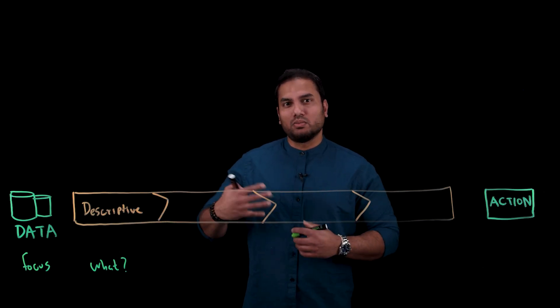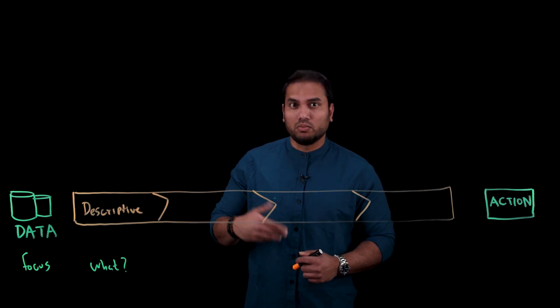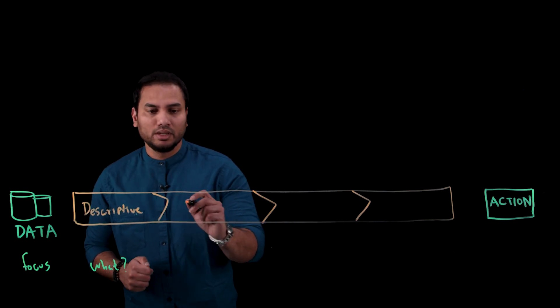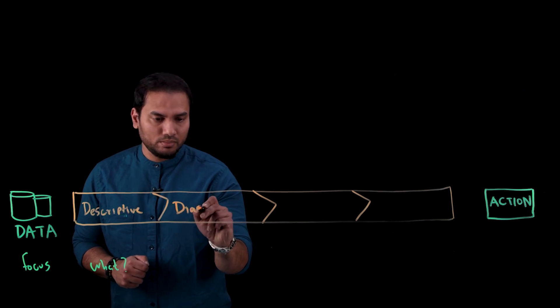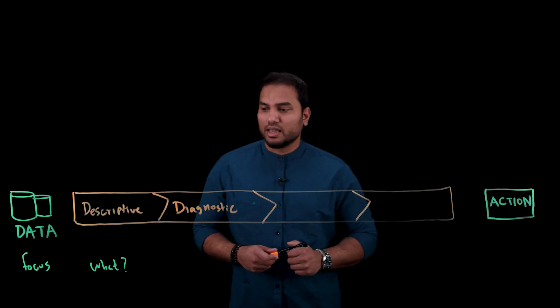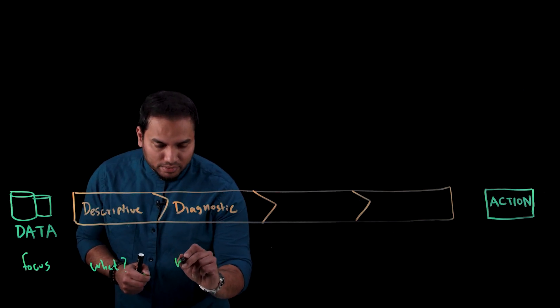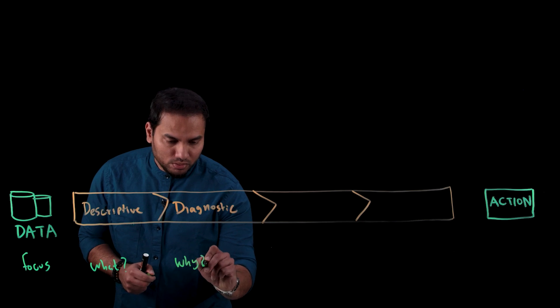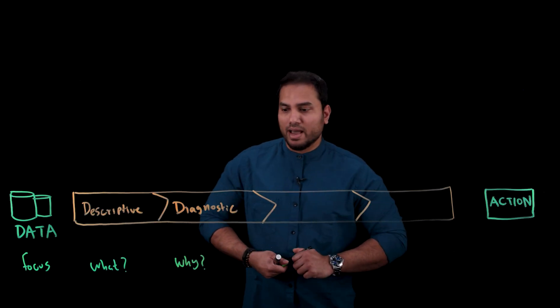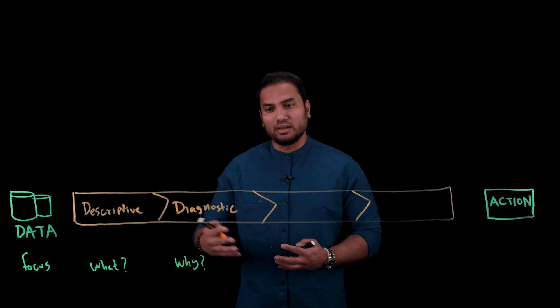Now, once you understand what had happened, the logical next step is to understand why something happened. And this is called diagnostic analytics. And the focus here is on understanding why something may have happened. So an example of a question here could be, why did my churn spike last quarter?